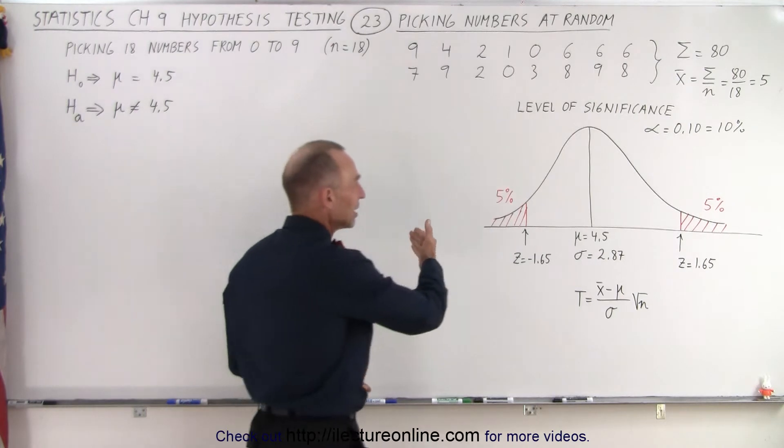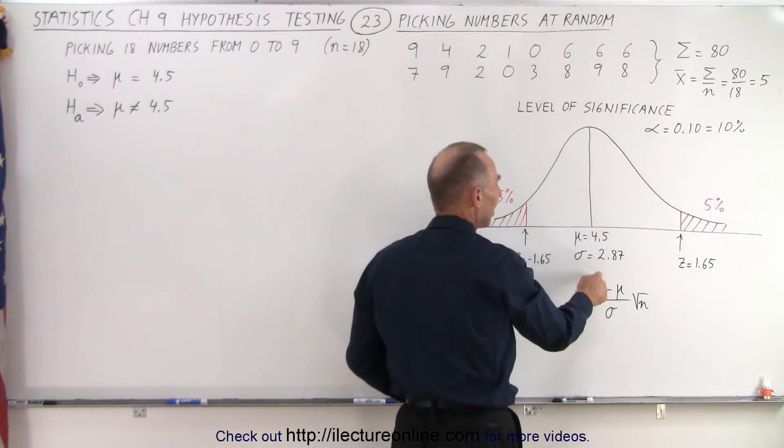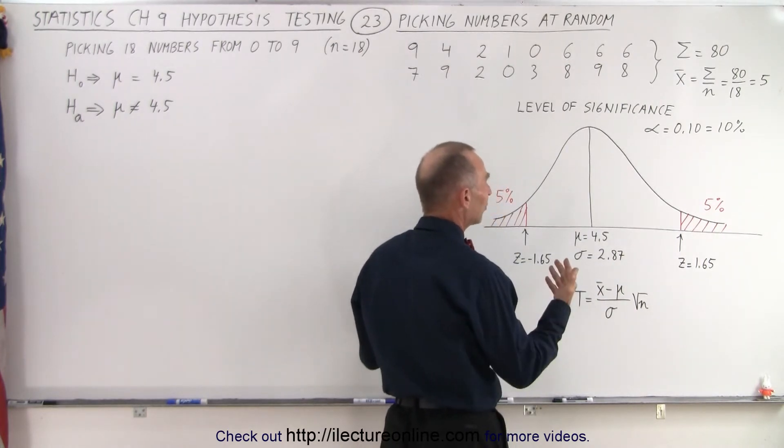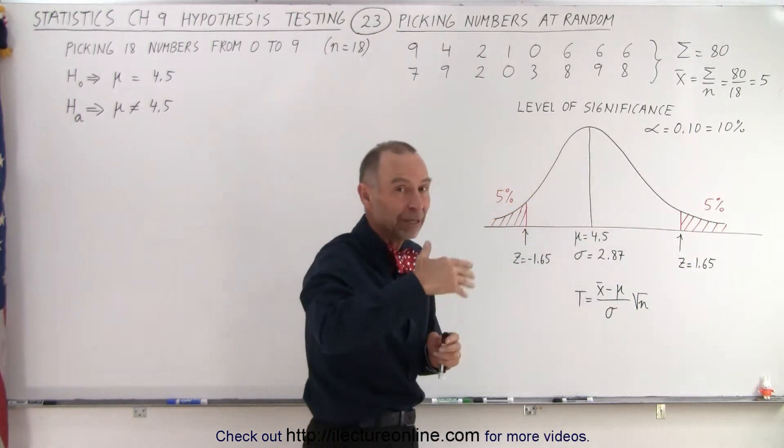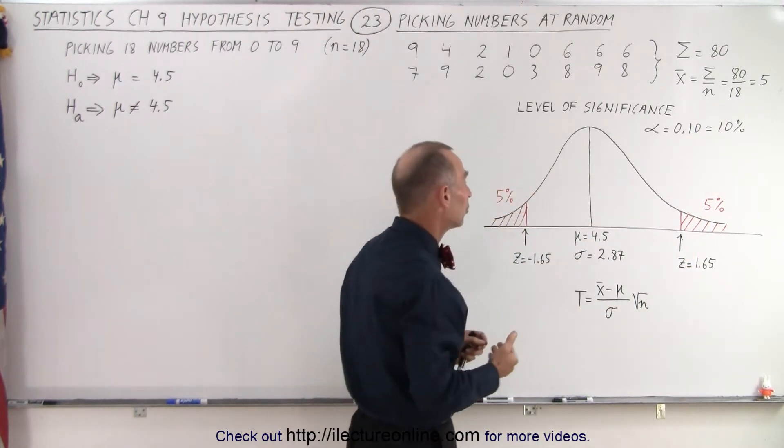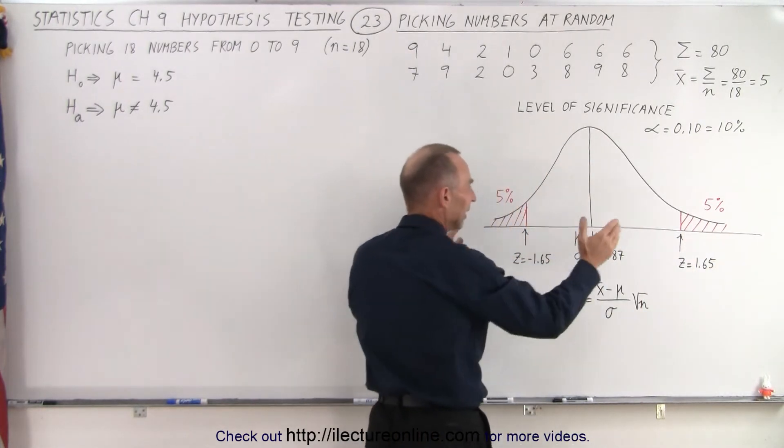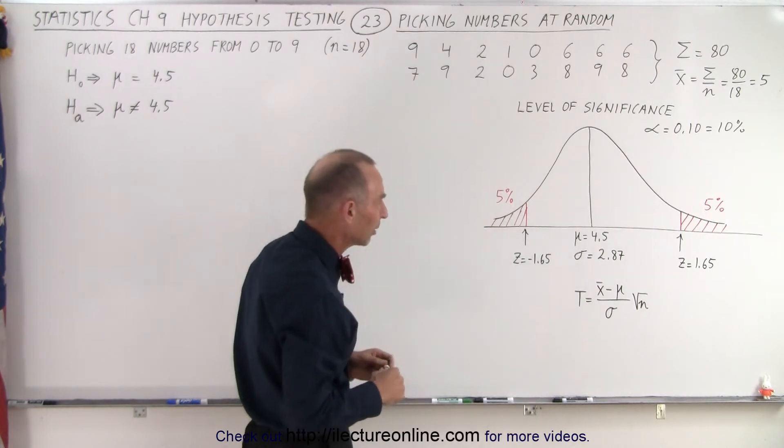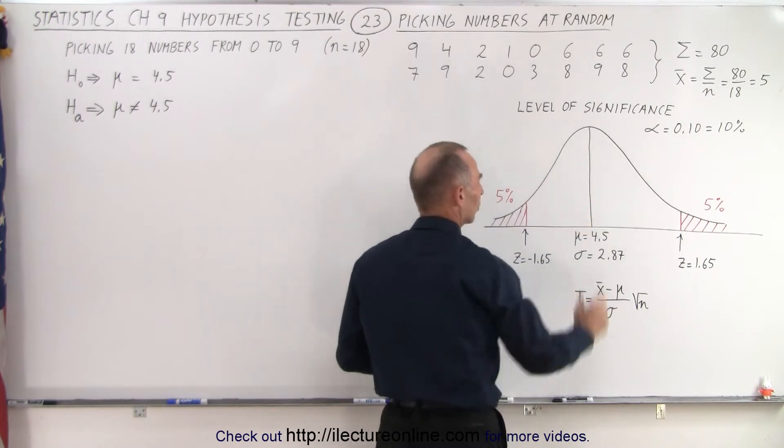Here we have drawn the population distribution. The mean of the population should be 4.5 with a standard deviation of 2.87. Notice that at 10% level significance, we have a two-tailed test because we could be larger or smaller than the average. So we have 5% on the upper side and 5% on the lower side signifying the critical regions on both sides of the population distribution, which leaves us with 90% in the middle for the non-critical region.